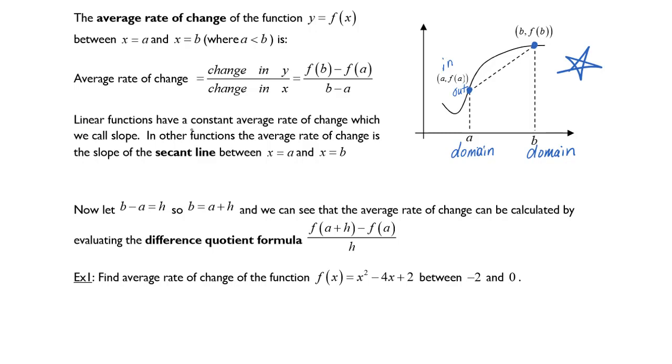So linear functions have a constant average rate of change which we call slope. In other functions the average rate of change is the slope of the secant line between x equals a and x equals b.